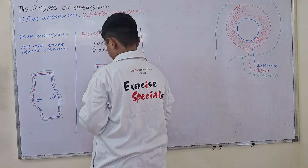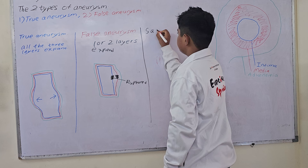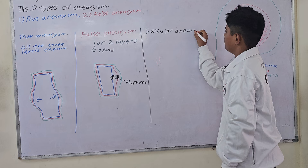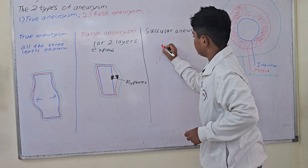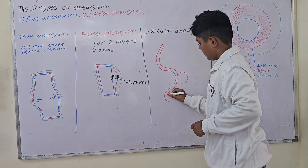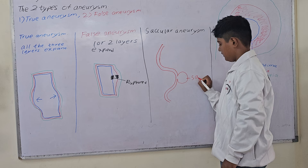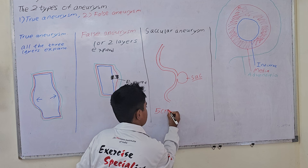Besides this, there are two more aneurysms defined by their shape. The next is Saccular Aneurysm. In Saccular Aneurysm, the aneurysm makes a sac-like appearance, with a diameter of 5 cm to 20 cm.